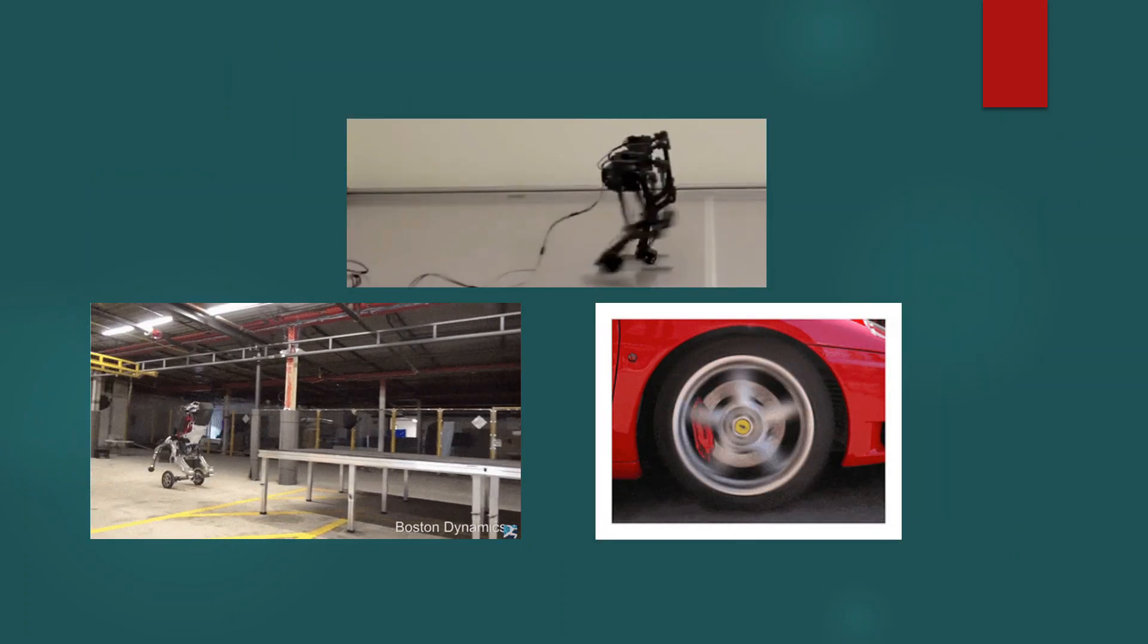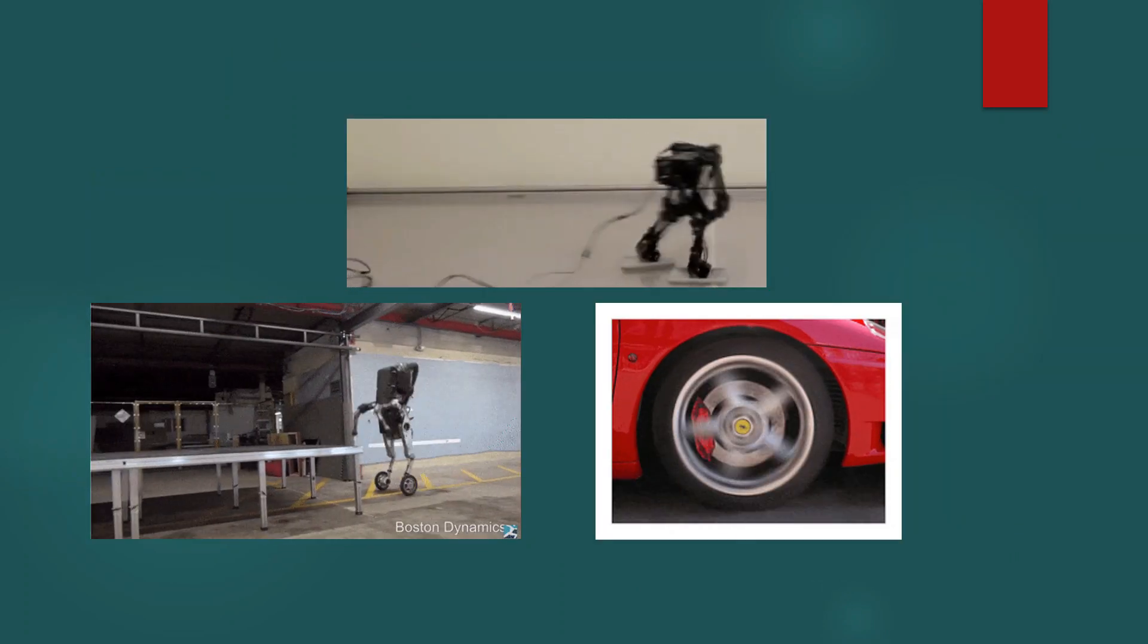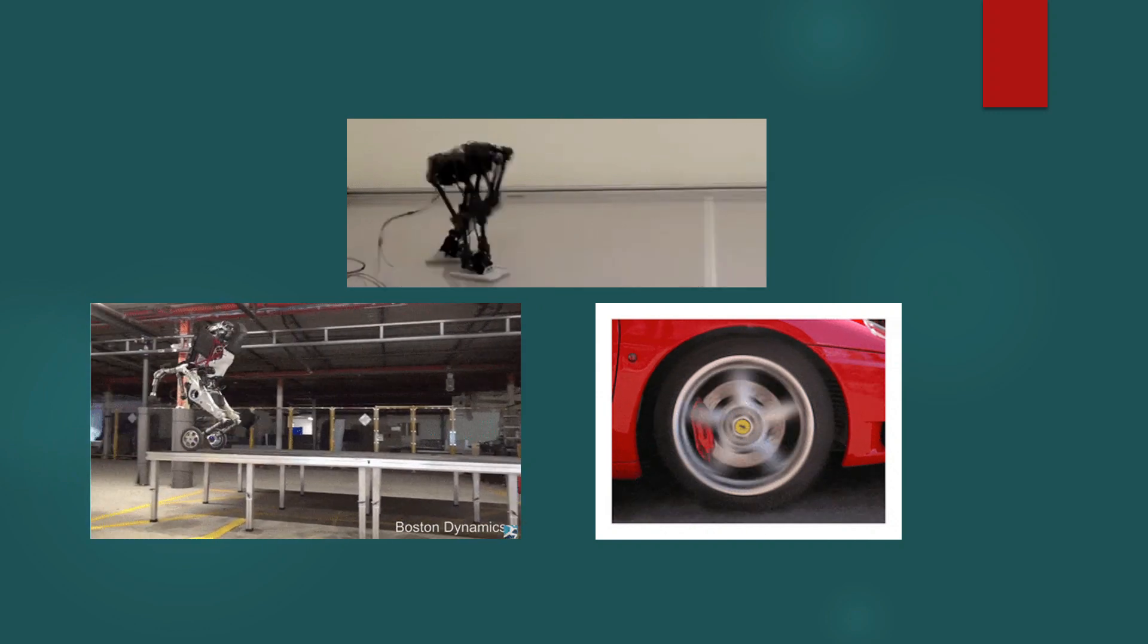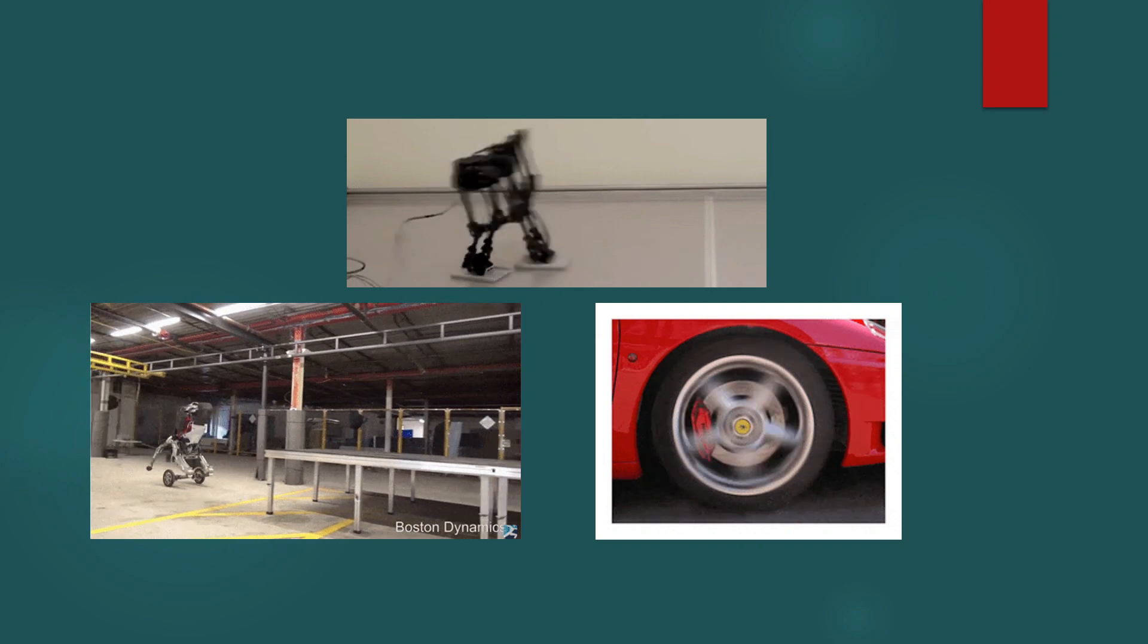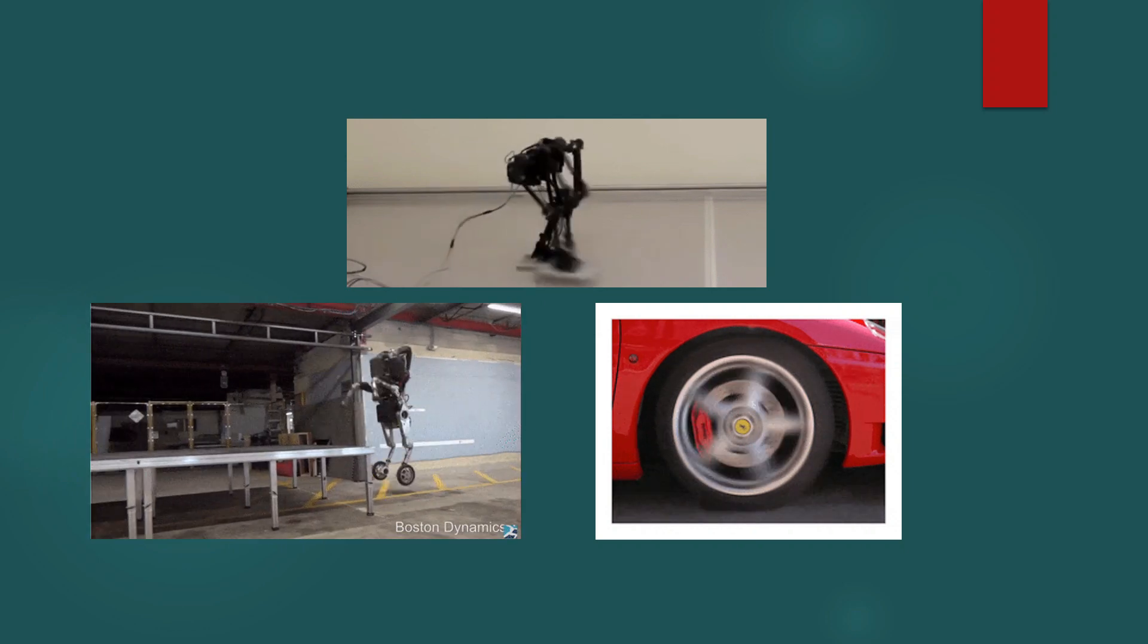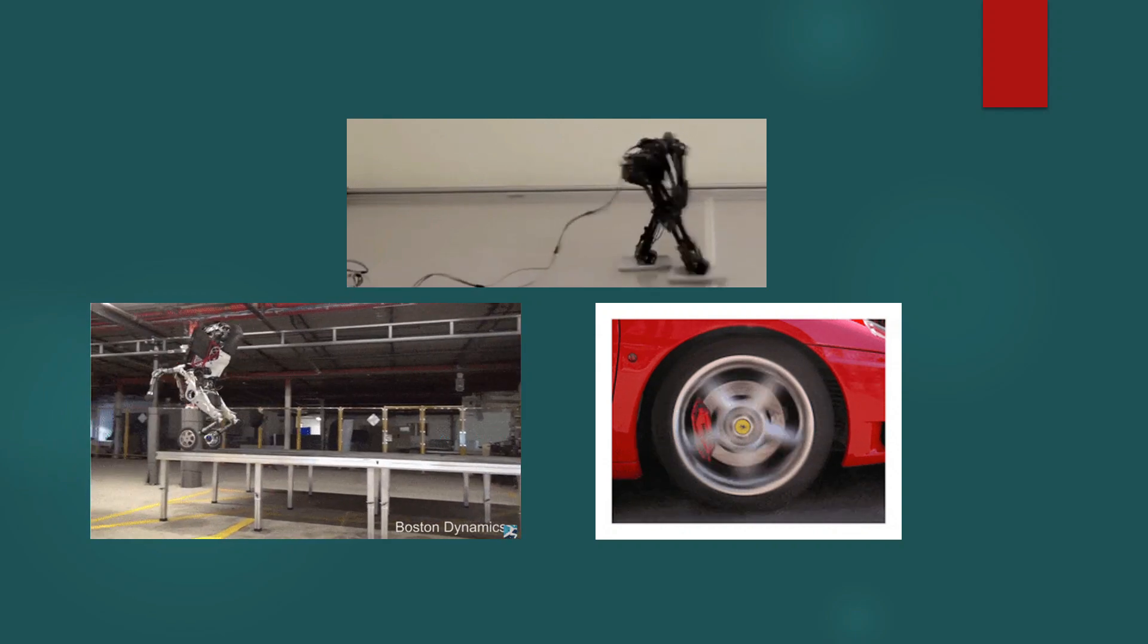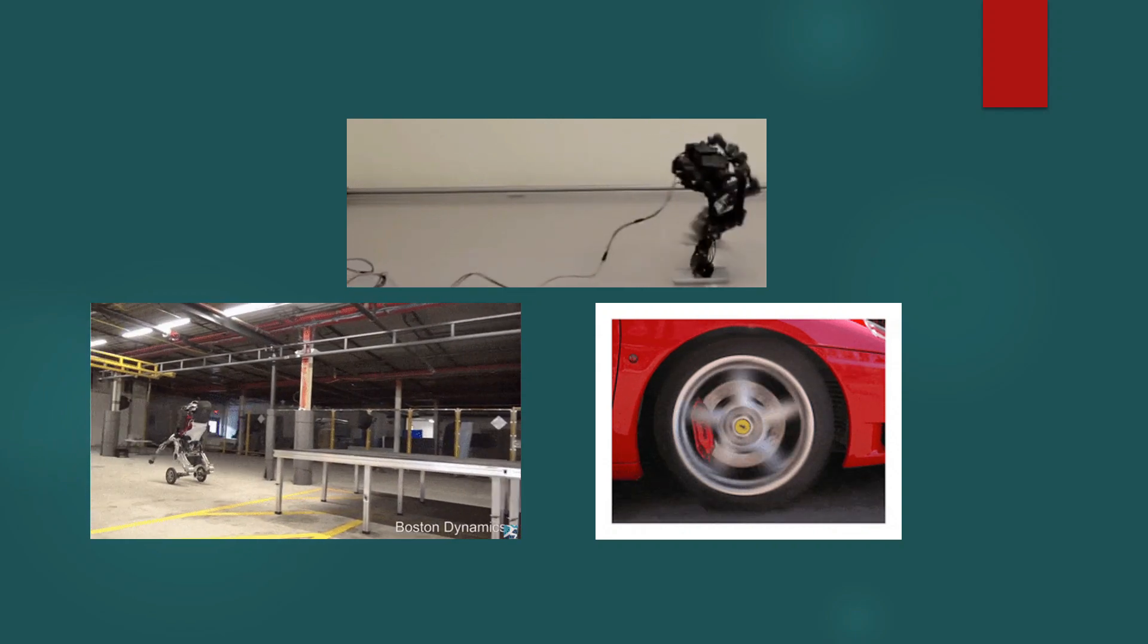A leg mechanism or walking mechanism is a mechanical system designed to provide a propulsive force by intermittent frictional contact with the ground. This is in contrast with wheels or continuous tracks which are intended to maintain continuous frictional contact with the ground. Mechanical legs are linkages that can have one or more actuators and can perform simple planar or complex motion.